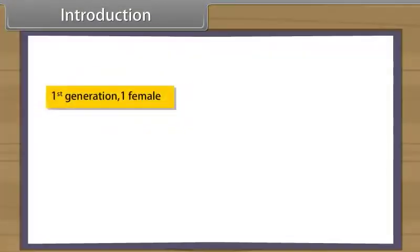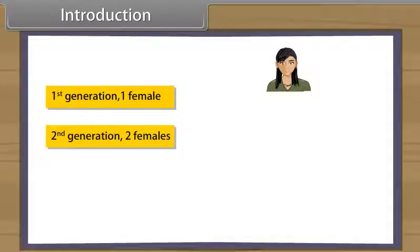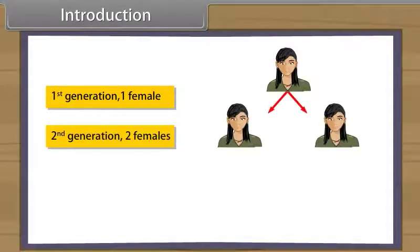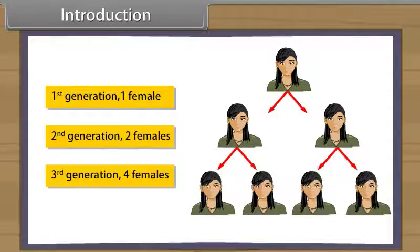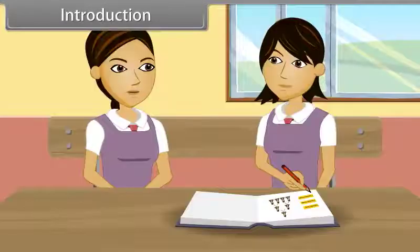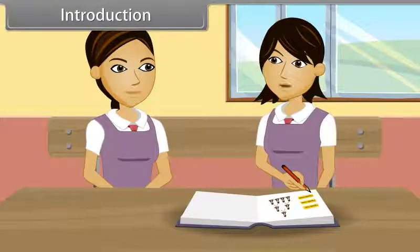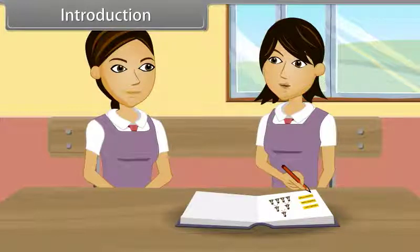First generation: one female. Second generation: two females. Third generation: four females. Wow, that was so simple. Do you know what we call such progressions? Such a progression is a geometric progression. Come, I will tell you more about this.